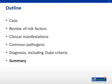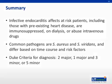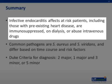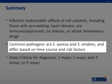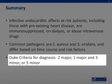Summary. Infective endocarditis affects at-risk patients, including those who have pre-existing heart disease, are immunosuppressed, on dialysis, or abuse IV drugs. Common pathogens are staph and strep, and differ based on time course and underlying risk factors. Duke's criteria for diagnosis include 2 major, 1 major and 3 minor, or 5 minor criteria.